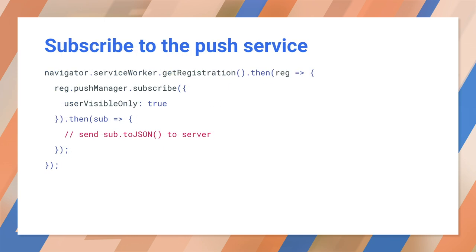Before you send notifications, the user must subscribe to a push service. You call pushmanager.subscribe on the service worker registration object to subscribe. The resulting push subscription object includes all the information needed: an endpoint and the encryption key needed for sending data. Each subscription is unique to a service worker, and the endpoint for the subscription is a unique URL — all that is necessary to send a message to a client. The endpoint URL needs to be kept secret, or other applications might be able to send push messages to your application.